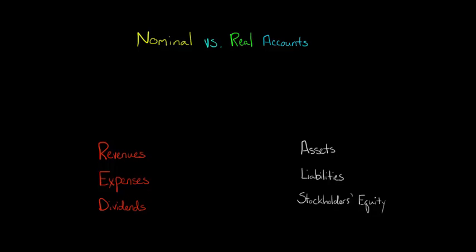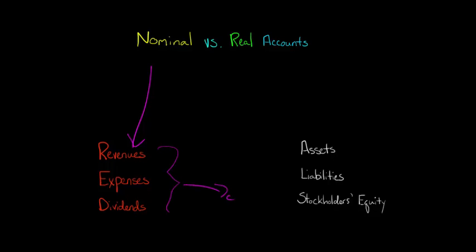In this video, we're going to talk about the difference between nominal and real accounts in financial accounting. Nominal accounts are things like revenues, any type of expense, and dividends. What makes them a nominal account is that they're going to be closed out — all these accounts are going to be closed out at the end of a year. That means we're going to bring their balances to zero and transfer their balance to a stockholders' equity account called retained earnings.